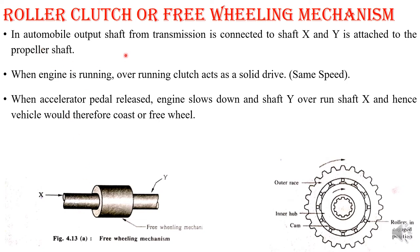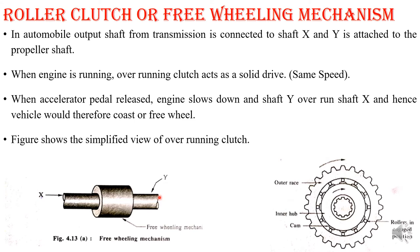In an automobile, the output shaft of the transmission is connected to the overrunning clutch — that is, the output shaft of the transmission is connected to X, and Y is connected to the propeller shaft. When running, both shafts will be at the same speed — we call that a solid drive. Whenever the accelerator is slowed down, X speed decreases but the speed of Y will remain the same. That is the function of this overrunning clutch.